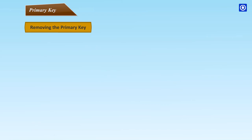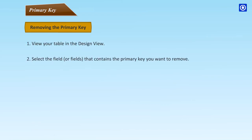Removing the Primary Key: View your table in Design View, select the field or fields that contain the primary key you want to remove, and choose the Primary Key command in the Tools group on the Design tab.